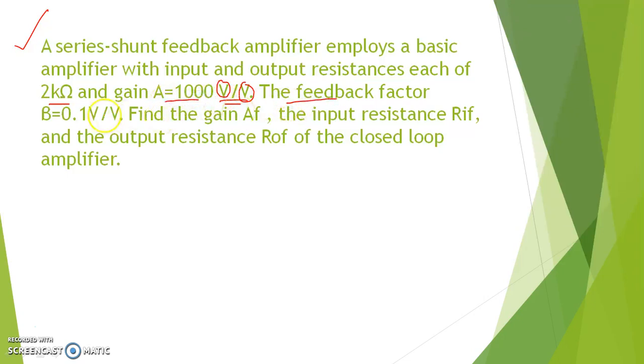The feedback factor β equal to 0.1 V/V. Find the gain AF, that is closed loop gain or gain with feedback and the input resistance Rif and the output resistance Rof of the closed loop amplifier. Here, F stands for feedback. So, the first step to solve this type of numerical is just draw the block diagram of the feedback amplifier which is given in the question.